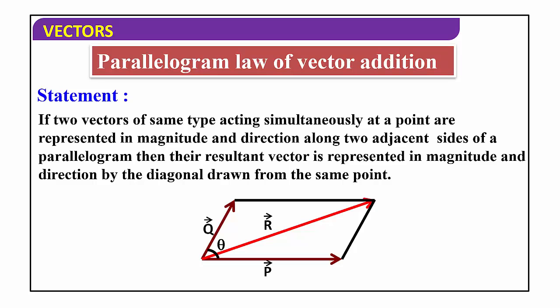The three laws of vector addition are: triangle law, polygon law, and parallelogram law. In triangle law, two vectors form two sides of a triangle and the resultant is the third side in the opposite direction. In polygon law, n vectors form the sides of a polygon and the resultant is the closing side in the reverse order. In parallelogram law, two vectors acting simultaneously at a point form adjacent sides, and the resultant is the diagonal. In the next session we will derive an expression for parallelogram law of vector addition.